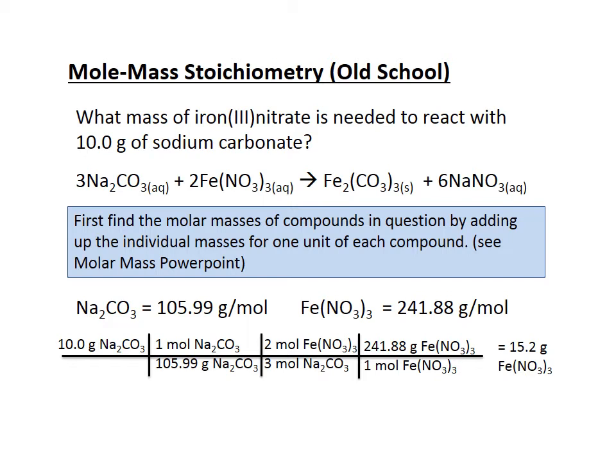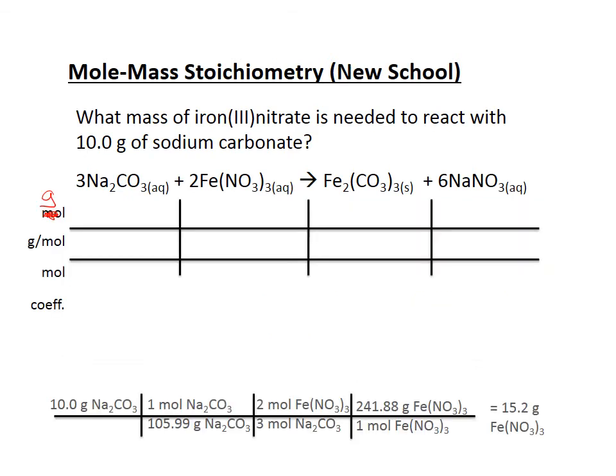I've found that students have some challenges applying the factor label method. I've got another method I partially used myself, but a student was very effective at it — she showed me what she was doing and I thought it was the best method ever. What she was doing was tabulating. In this table, on the far left I've got grams, then grams per mole, then moles, then coefficient. I'm going to change that top line to grams.